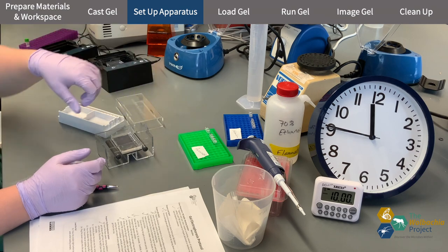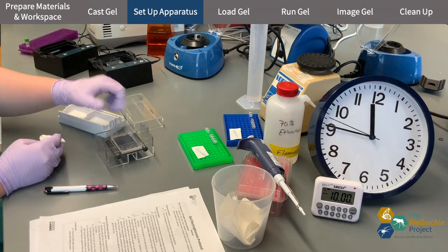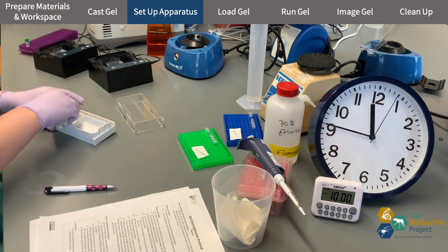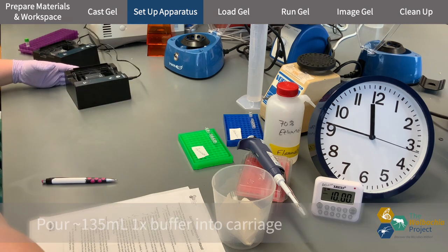This is what a properly set up Mini One buffer tank looks like. Add the buffer tank to the apparatus and lightly push it in to make contact with the rivets.